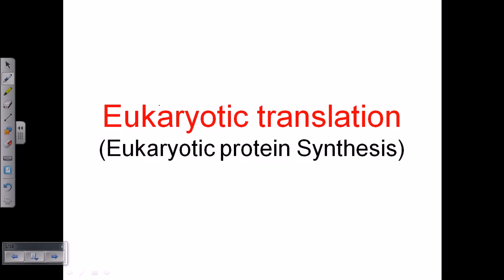Protein synthesis is one of the most important things going on inside the cell, which is why it is so complicated. For our understanding, I've divided this into three different sections and three different videos. I'll talk about eukaryotic translation initiation, which is the most important and complicated part and differs greatly from prokaryotic initiation, then eukaryotic translation elongation, and eukaryotic translation termination.